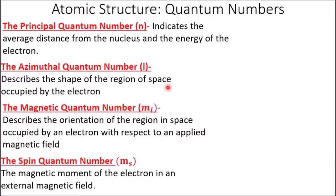The four quantum numbers — n, L, ML, MS — come together to describe the properties of the wave functions of an electron, describing the position and average energy of electrons. The principal quantum number n indicates average distance and energy; L describes the shape of the region of space; ML describes the orientation with respect to an applied magnetic field; and MS describes the spin, the magnetic moment. Shell, sub-shell, slot, spin.